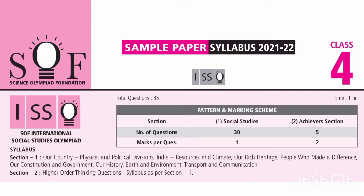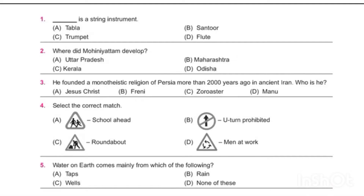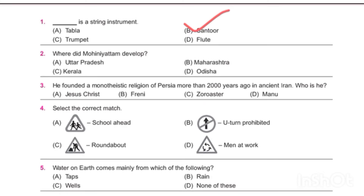Hello friends, welcome to my channel. Today I am going to give you the simple paper of ISSO Class 4. So without any delay, let's begin the video. Our first question is: what is a string instrument? The answer is santur. Next question: where did Mohiniattam develop? The answer is option number C, Kerala.